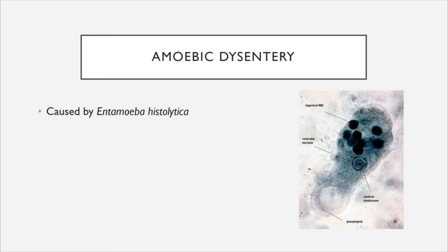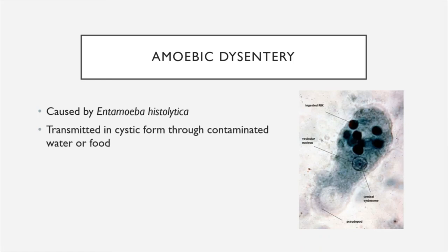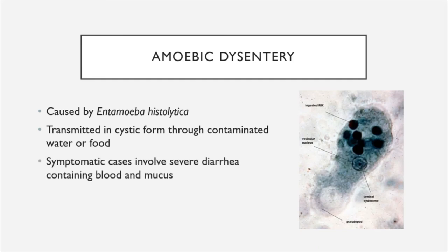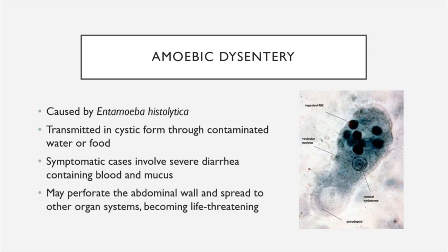Amoebic dysentery is caused by Entamoeba histolytica, an amoeba that produces pseudopods and is known for its ability to ingest and destroy red blood cells. Like Giardia, it is transmitted in its protected cystic form through contaminated water or food. Many cases are asymptomatic, but symptomatic cases involve severe diarrhea containing blood and mucus. This amoeba is capable of perforating the abdominal wall and spreading to other organ systems, which can make the infection life threatening in severe cases.